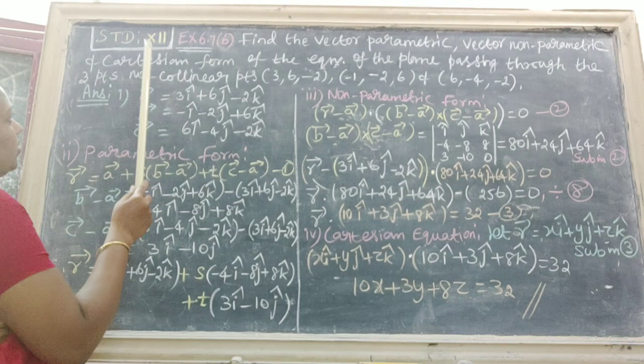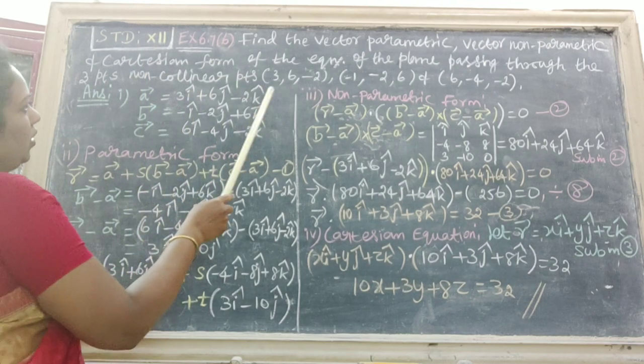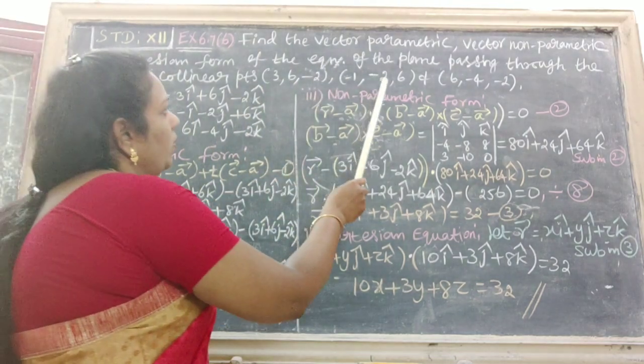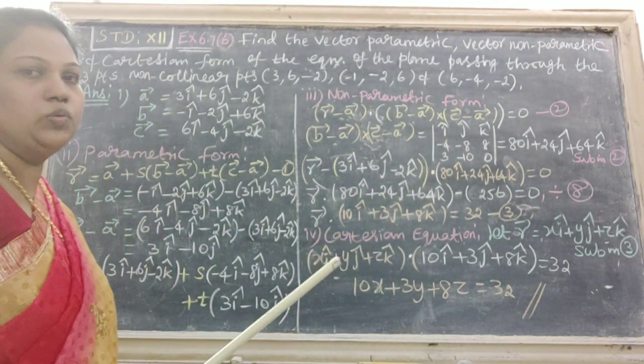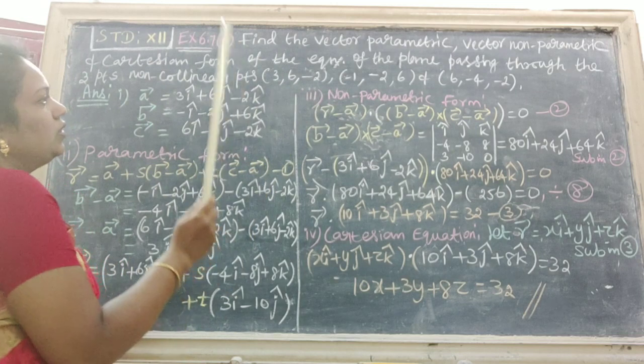Here three points, non-collinear points: 3, 6, minus 2; minus 1, minus 2, 6; and 6, minus 4, minus 2. Clearly, we know that this is type 3.